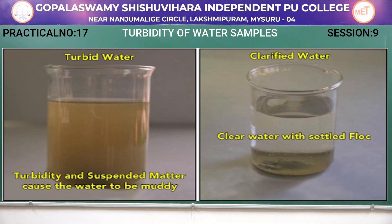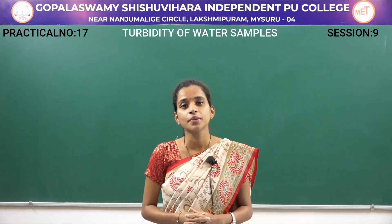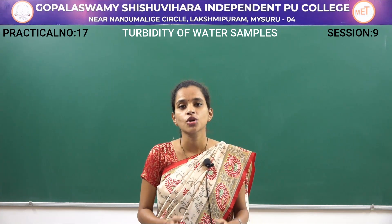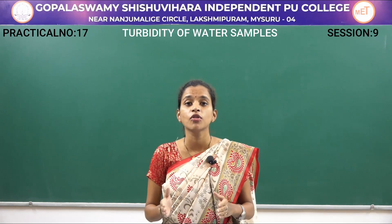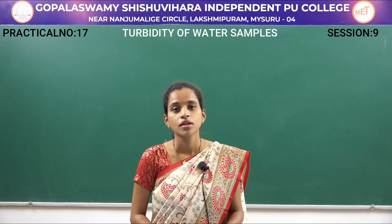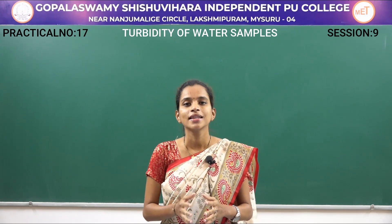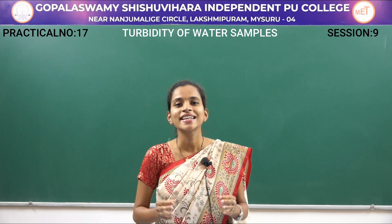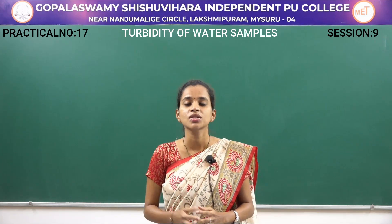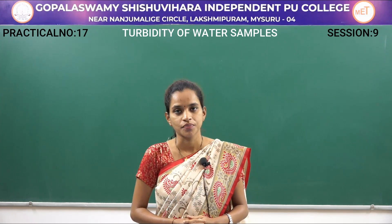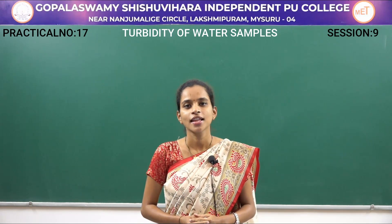Based on the amount of sediment collected at the bottom, the water can be identified as turbid, semi-turbid, or clear. More sediments indicate the water sample is turbid; lesser or no sediment indicates semi-turbid or clear water. Based on turbidity, we can determine whether the water is suitable for consumption — more turbidity means not suitable, while clear water is very much suitable for consumption. Thank you.